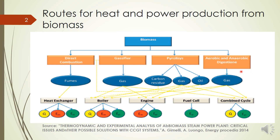Another option is biological conversion — by aerobic or anaerobic digestion we obtain biogas, and that biogas can be used in an engine for power production or in a combined cycle. So these are the different options available for power production using biomass. If we obtain a gaseous fuel from biomass through any method, we can use an IC engine, a fuel cell for direct electricity, or a combined cycle using a gas turbine or steam turbine coupled with a gasifier. Depending on the product and quantity, we can choose one of these routes.